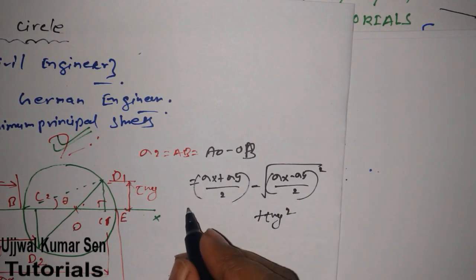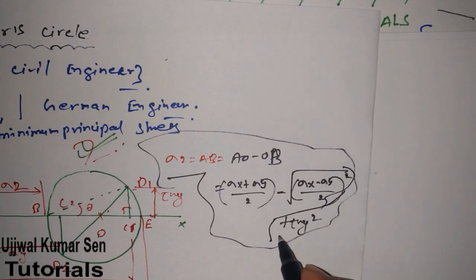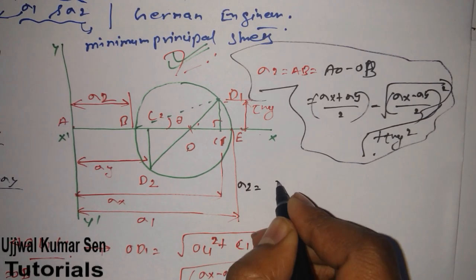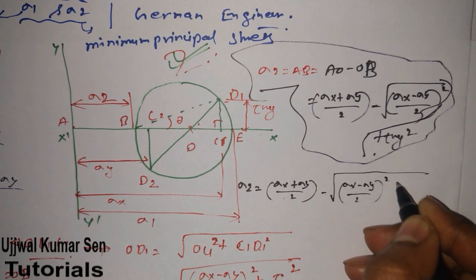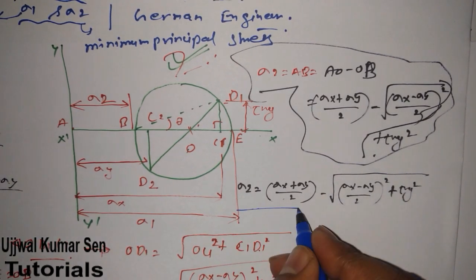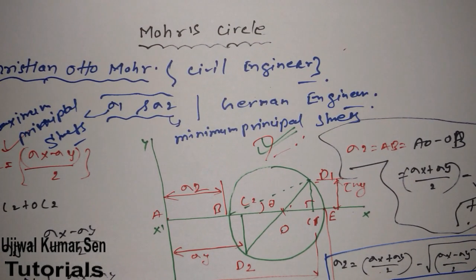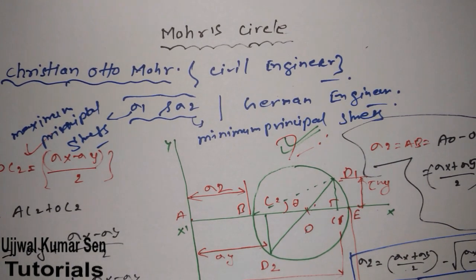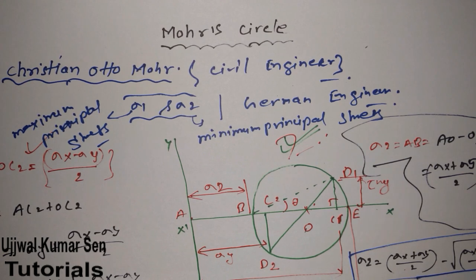So sigma two equals (sigma x plus sigma y) / 2 minus root of [(sigma x minus sigma y)/2]² plus tau xy². This is the formula for finding minimum principal stress. This is all about the derivation of Mohr's circle. If you have any problems, you can contact me and I will try to make a video on it. Don't forget to subscribe and share with your friends. Thanks for watching — bye!